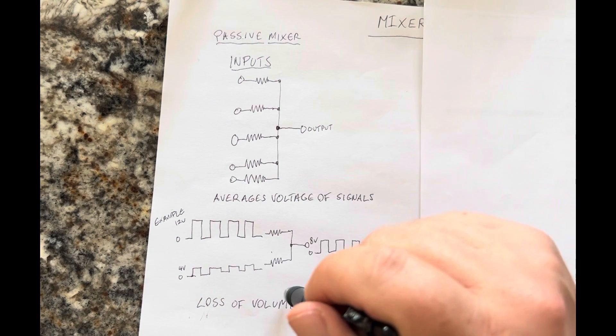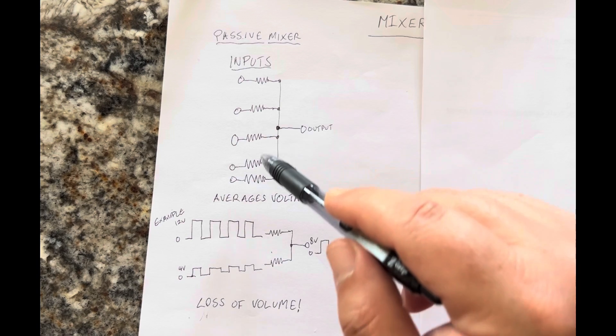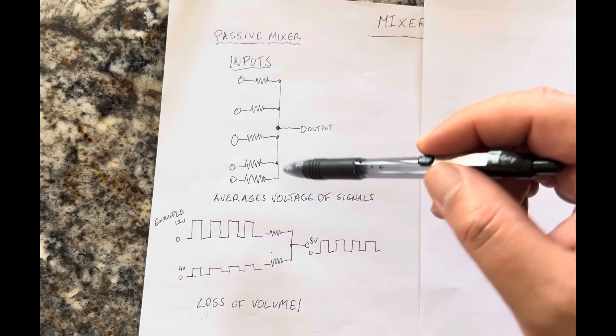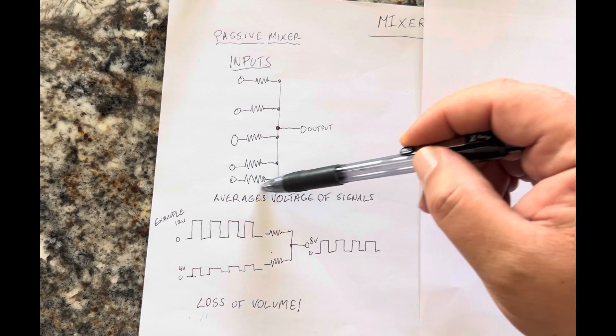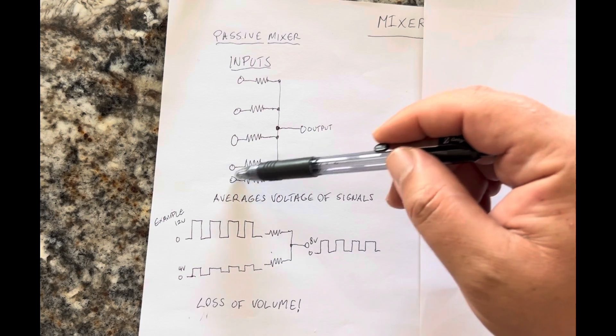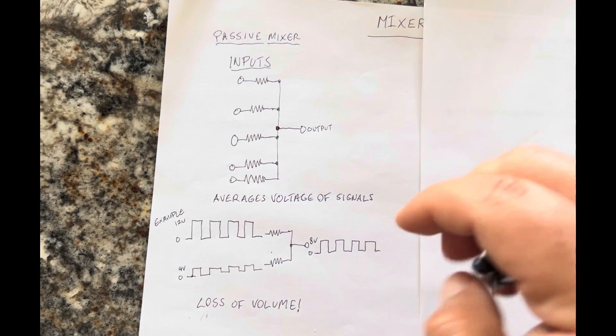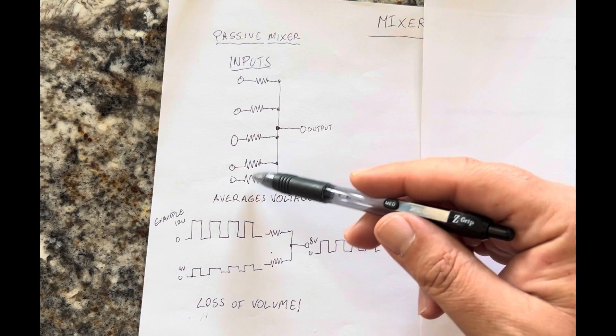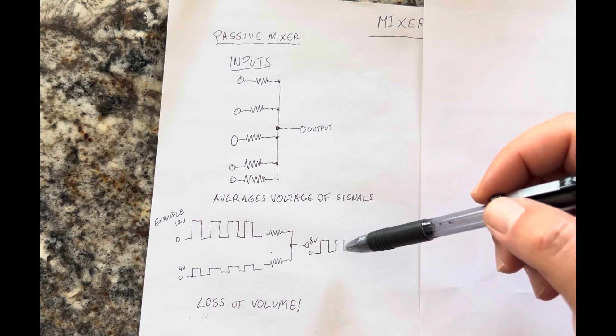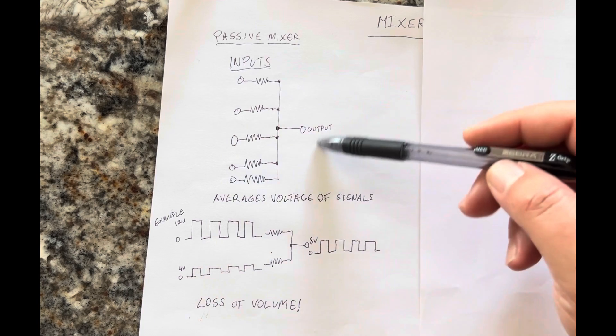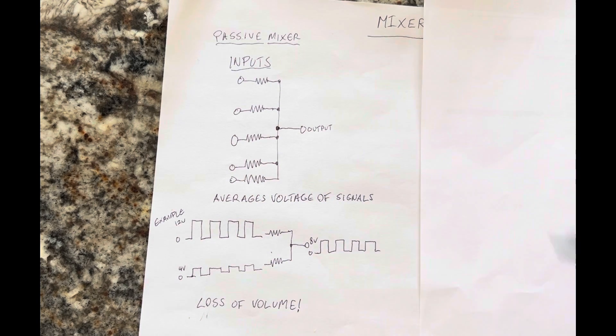This is particularly bad when you want one of the inputs to be completely off. So if you take this and put it to ground, you don't want one input at all, or you've already decreased the volume to it. It averages out, and it basically decreases the volume of all of the input signals. And that is not the best solution for creating a mixer.